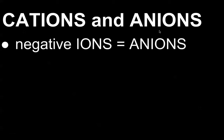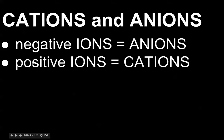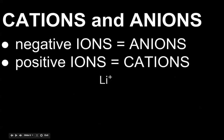Last but not least, let's talk about cations and anions. Anions are negative ions — a good way of thinking of it is AN as in 'a negative ion.' A positive ion is going to be a cation — some people like to think of cats being positive. Here are some examples: lithium is positive, so it's a cation. Oxygen 2 negative is an anion. Magnesium 2 plus is a cation because it's positive. Fluorine negative ion is an anion. That's the basis of valence electrons and the ions produced for each group in the periodic table.